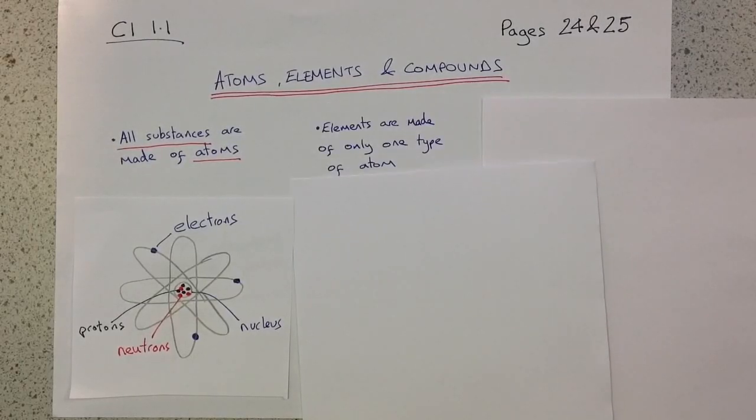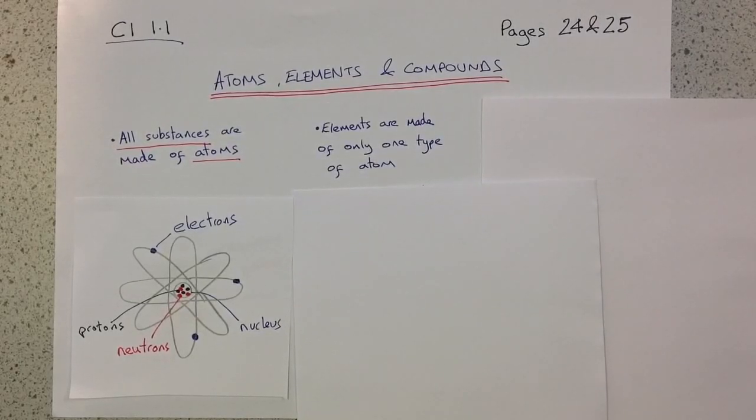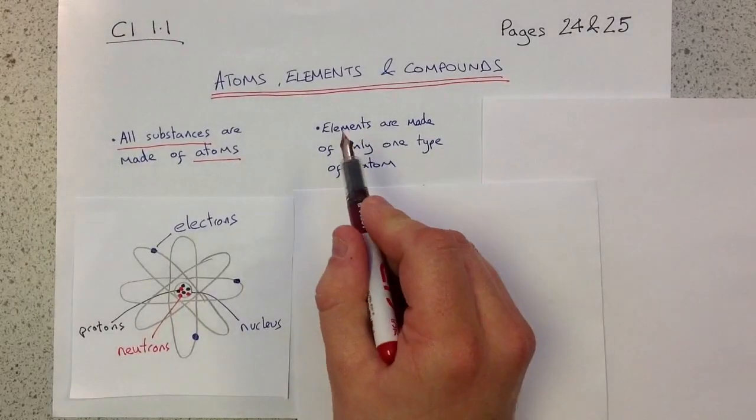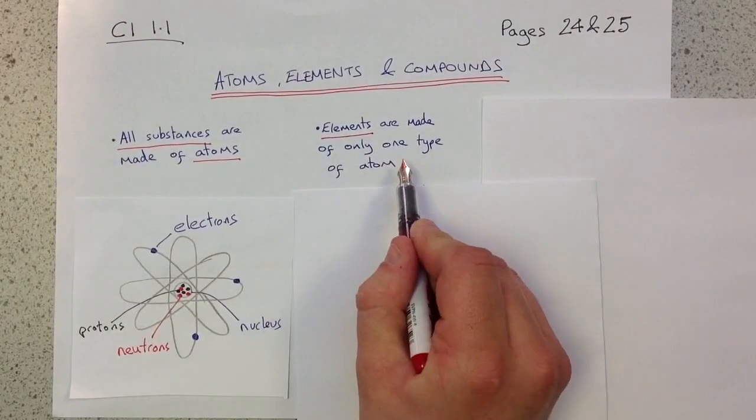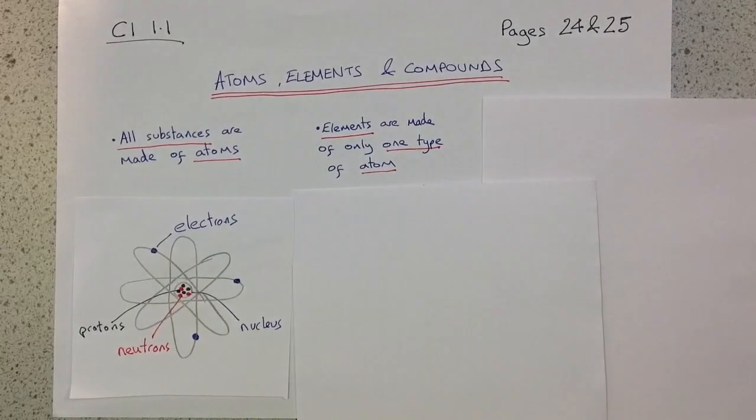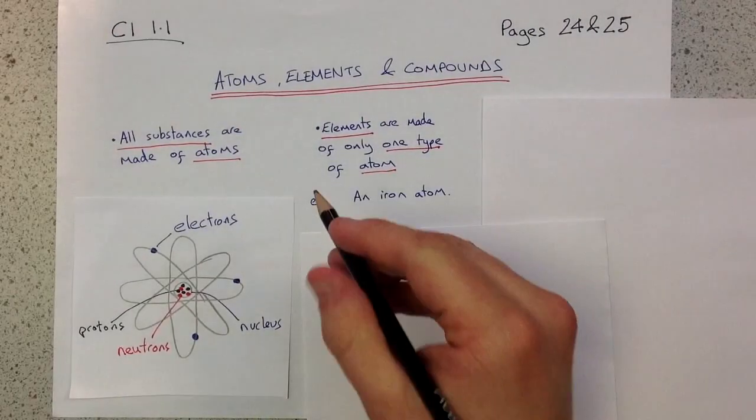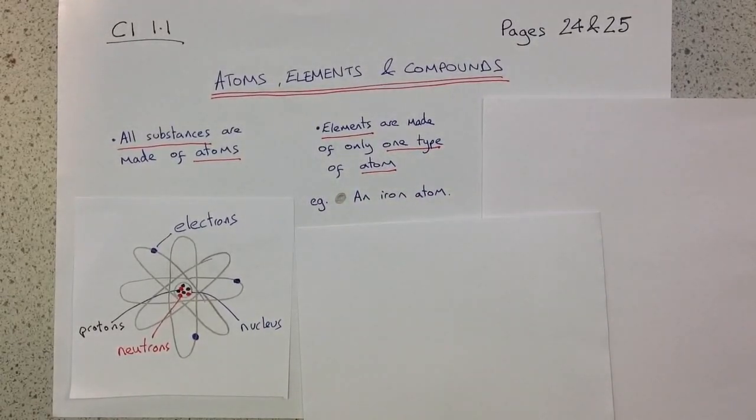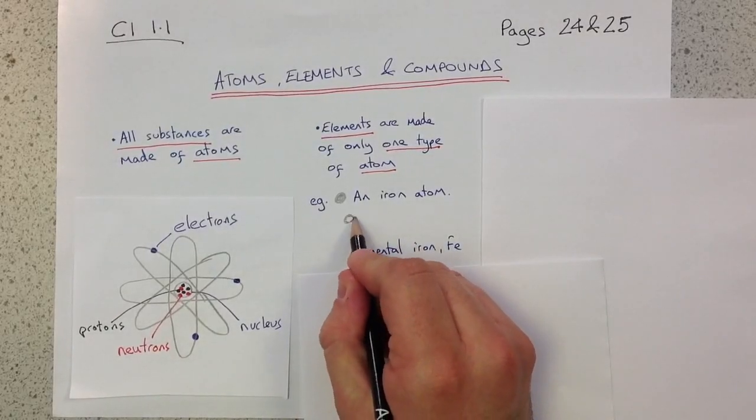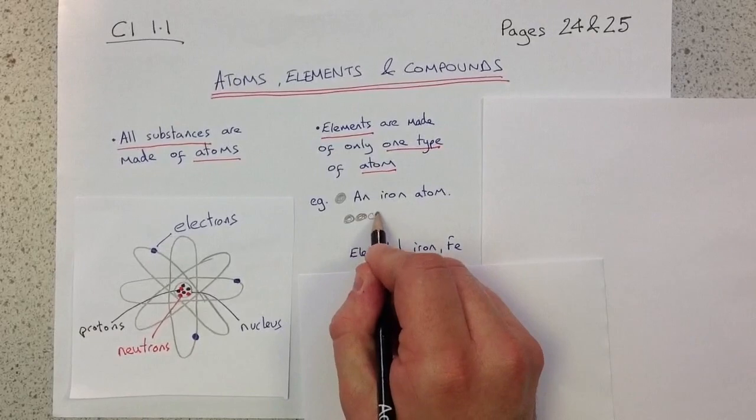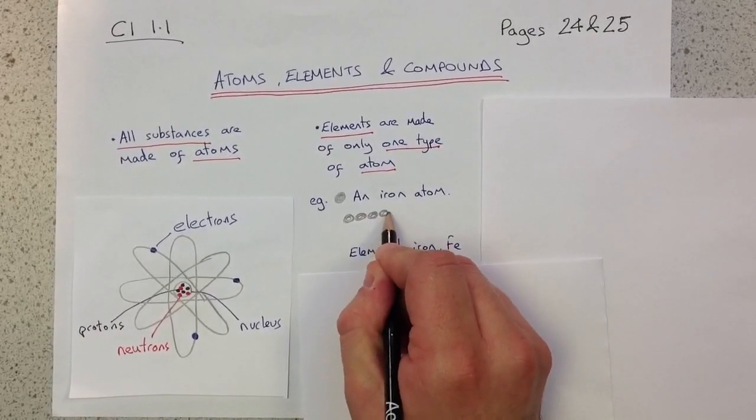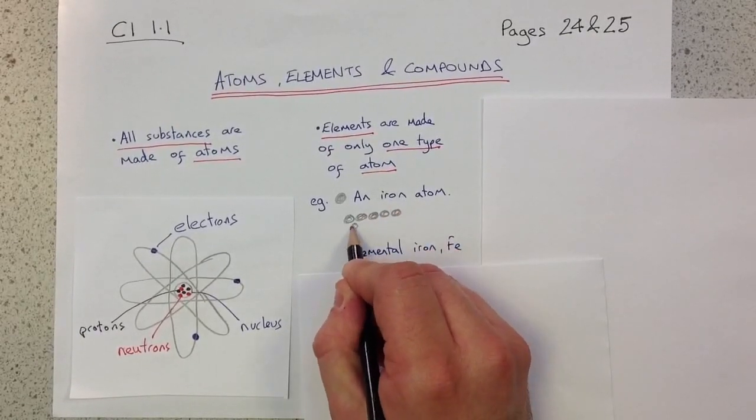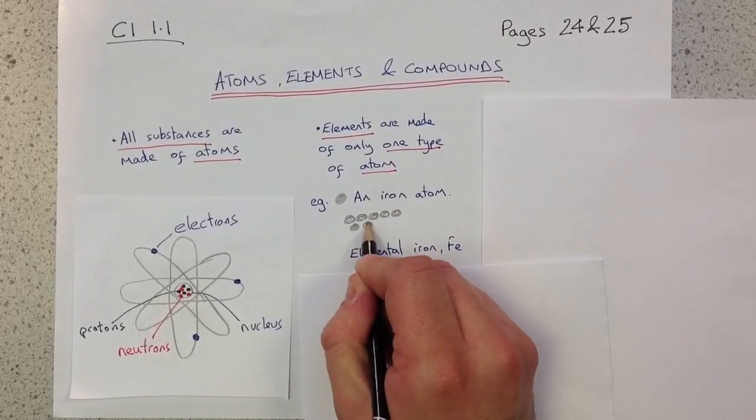Moving on to elements. Elements are made of only one type of atom. For example, if we have an iron atom, which I can draw there very straightforwardly. The element iron will be lots and lots of these individual iron atoms, all bonded together, such as this.